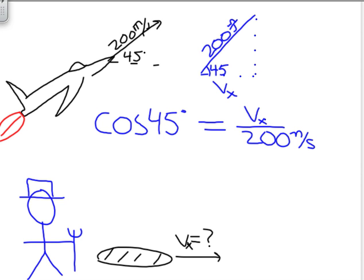Now, let's isolate for the x component of velocity. So we will multiply both sides by 200 meters per second. Remember, what you do to one side of the equation, you have to do to the other side of the equation. If you slap one cheek, slap the other cheek.